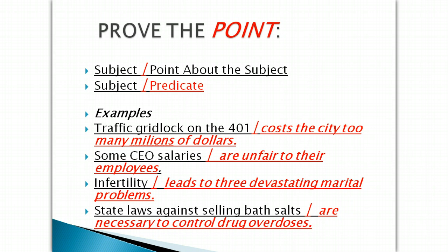"Infertility leads to three devastating marital problems." Again, that may not be true — it may lead to seven or twelve, or it may not lead to any marital problems — but we're taking the position that it leads to three devastating marital problems, and that's what we would further prove. In that paragraph I would look for examples: tell me what the three are — for example this, for example that, for example this third thing. "State laws against selling bath salts are necessary to control drug overdoses." We can't just talk about state laws; we have to talk about state laws that are against selling bath salts, and we have to further explain why they are necessary to control drug overdoses.